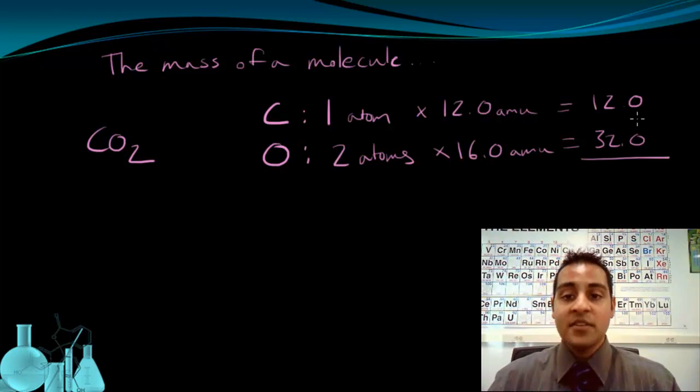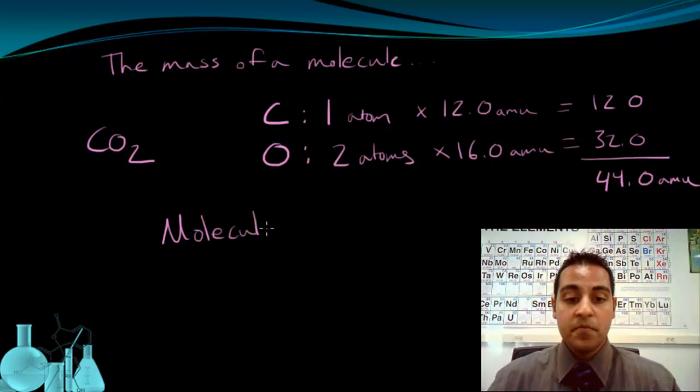If I add up these values, the total weight of carbon and the total weight of oxygen, I get 44.0 AMUs, which is the mass of one molecule of carbon dioxide. We call this the molecular mass. The molecular mass of a compound is the mass of a single molecule of that compound.